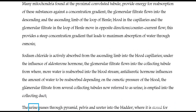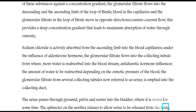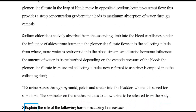The urine passes through the pyramid, pelvis, and ureter into the bladder, where it is stored for some time. The sphincter on the urethra relaxes to allow urine to be released from the body. The next question asks to explain the role of the following hormones during homeostasis.